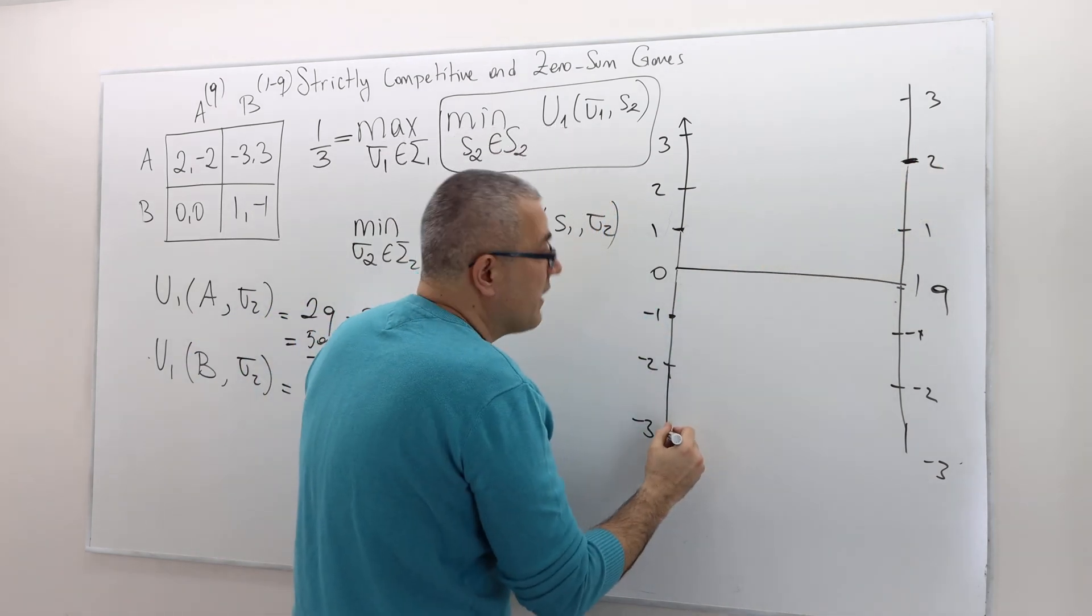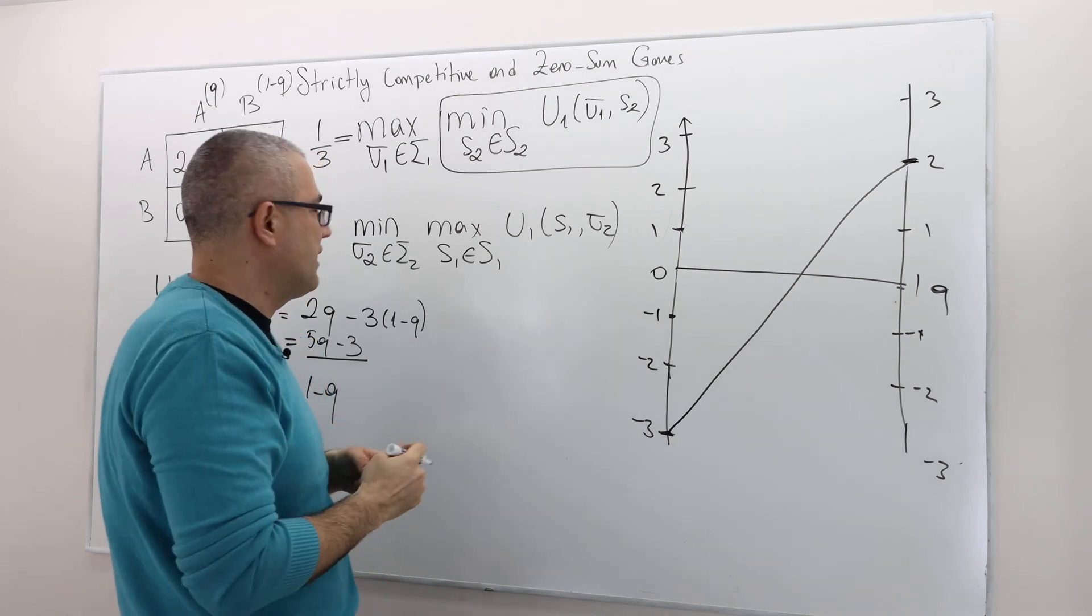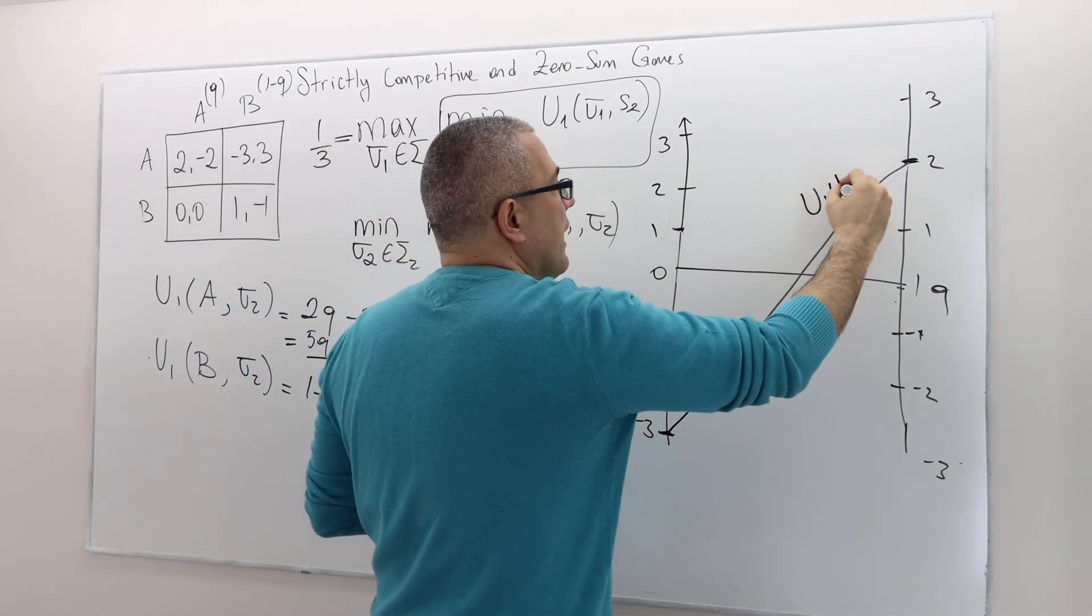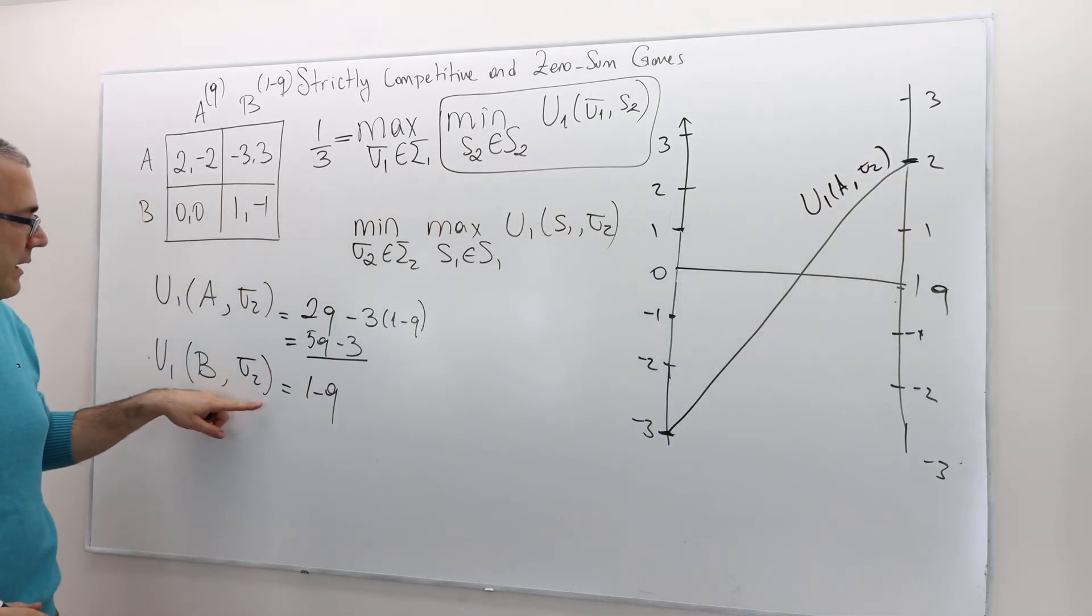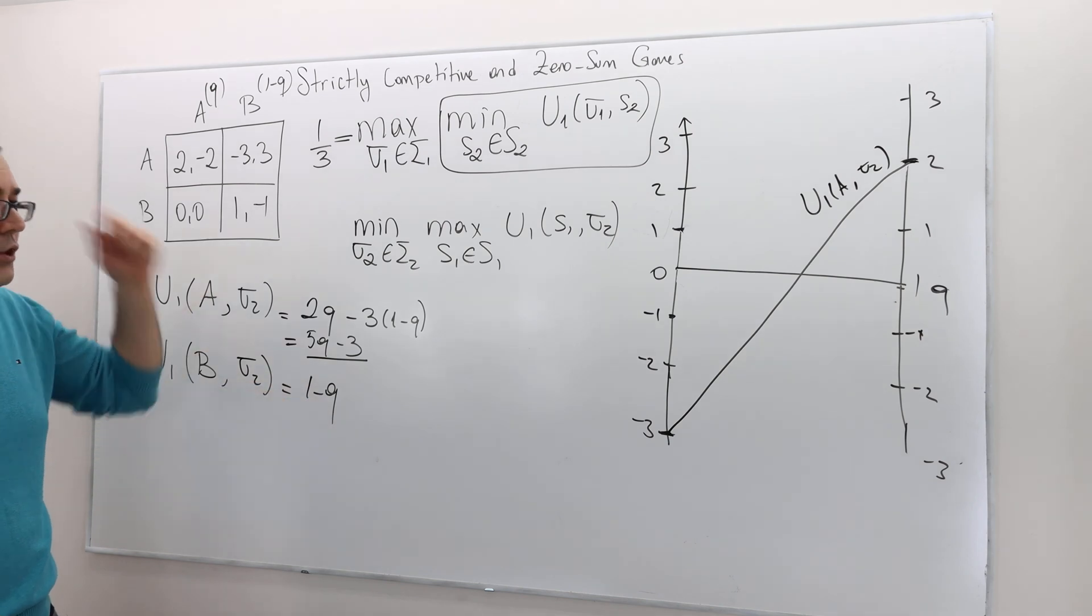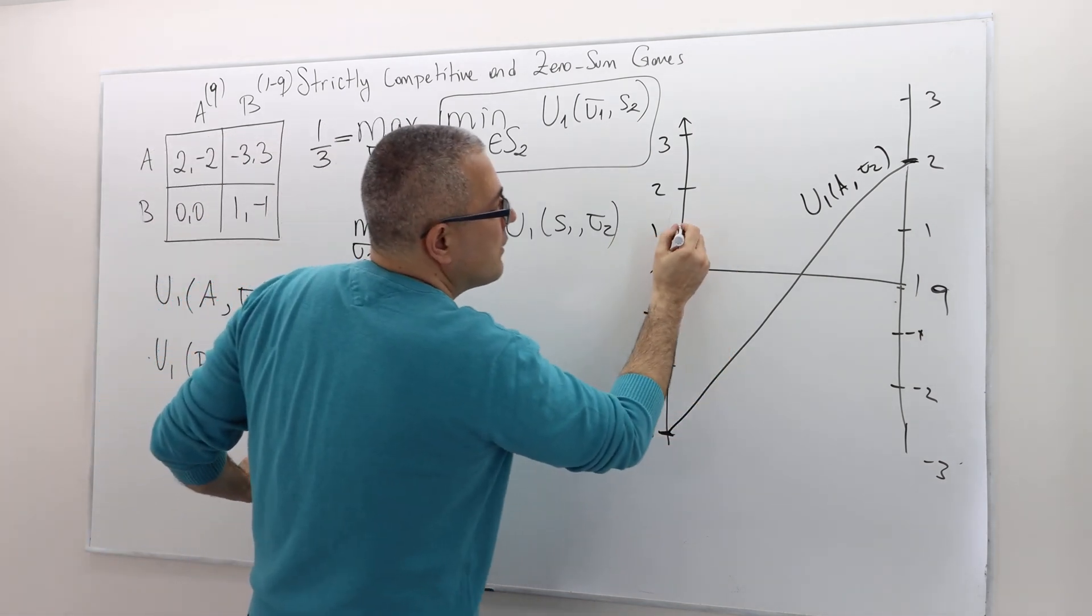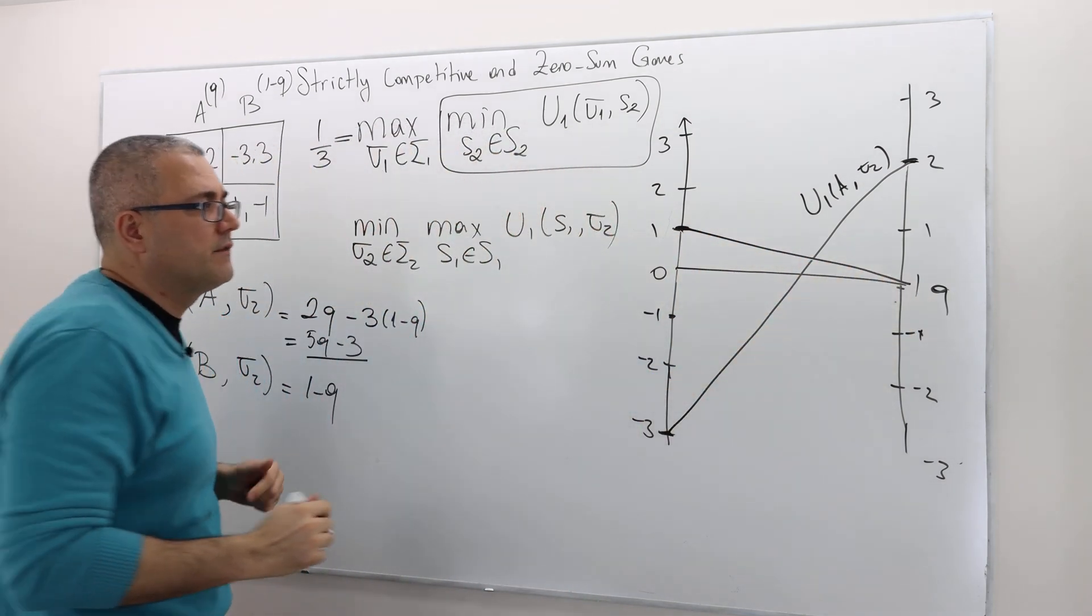It's a linear function and it's going to go this way. Oops, sorry, it's supposed to be a straight line. My bad. So this is U1 A sigma 2. Well, what about this? If I play B? If I play B, it's 1 minus Q. When Q is 0, it's 1. When Q is 1, it's 0. So it's going to be this. Okay. Once again, they're going to intersect. Fine. But what does that mean?